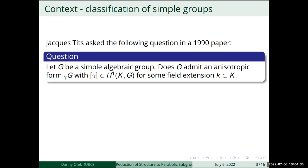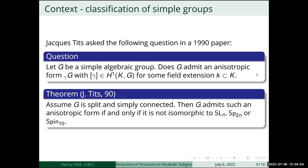Tits was interested in this for a reason: he was trying to prove, for those who know what a Tits index is, that a form of E₈ exists with a certain Tits index. In the same paper, he proved the following theorem. He answered this in the case where G is split and simply connected: G admits such an anisotropic form if and only if it is not isomorphic to either the special linear group, the symplectic group, or Spin(10).